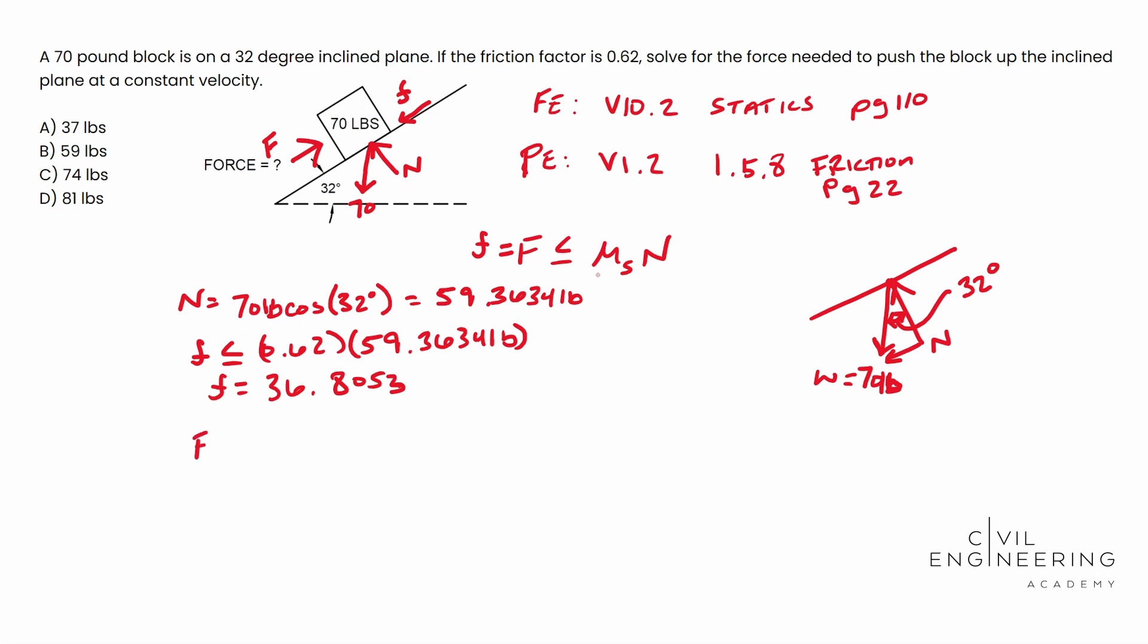Here's where our sine is going to kick in. We need to solve for the force of the block, and that's going to be equal to 70 pounds times the sine of 32. Now we're solving for this guy. We're acting against the friction factor and we're also acting against this block trying to push against us. When we solve for this, this ends up being 37.094 pounds.